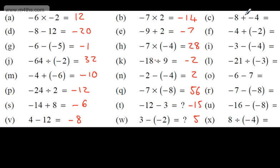Negative 8 plus a negative number gets more negative, giving negative 12. Adding another negative starting at negative 4 gives negative 6. Starting at negative 3 but adding 4 gives positive 1. Two negatives: 21 divided by 3 is 7, and the answer is positive 7.